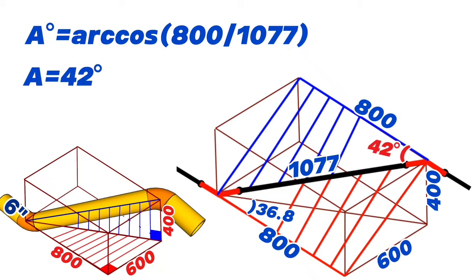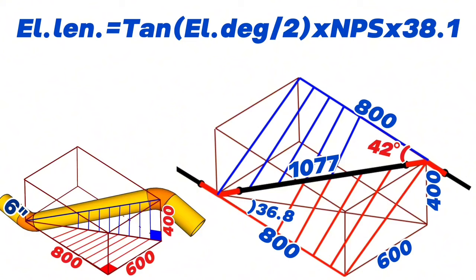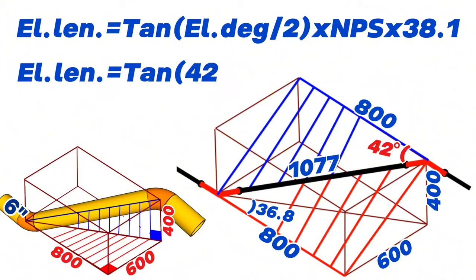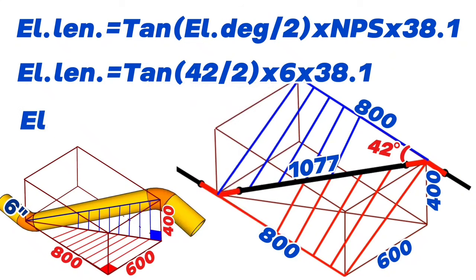Now let's calculate the elbow center-to-end dimension. The formula is: elbow length (mm) equals tangent(elbow degree ÷ 2) × NPS × 38.1. For a 6-inch 42-degree butt-weld elbow: tangent(42/2) × 6 × 38.1 ≈ 88 millimeters. So the 6-inch 42-degree butt-weld elbow center-to-end dimension is 88 millimeters.